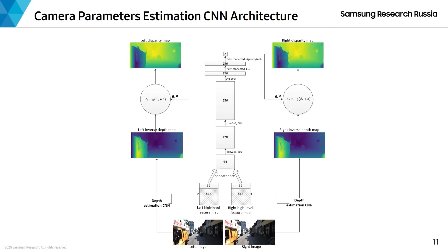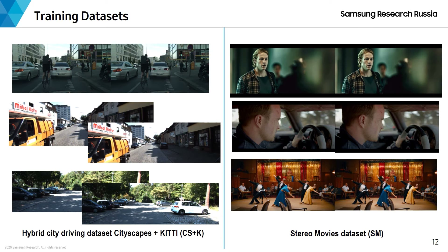To train our model, we use two datasets: a hybrid city driving dataset combining the well-known Cityscapes and KITTI datasets, which we call CS+K, and a stereo movies dataset, which we call SM, composed of high-quality commercial stereo movies.